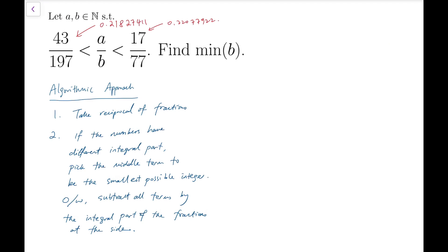Let me first elaborate on the problem statement. The two fractions are about 0.21827411 and 0.2207922 if we change into decimal form. So there is no pattern by simply observing its decimal values. However, there is actually an algorithm that allows us to pick the fraction we want. So here are the steps.